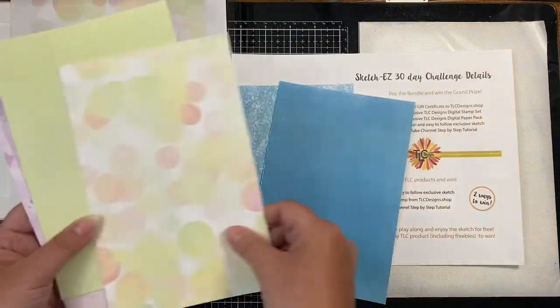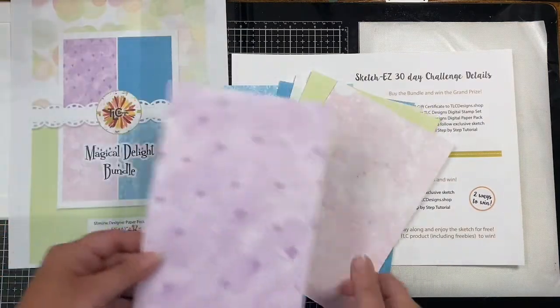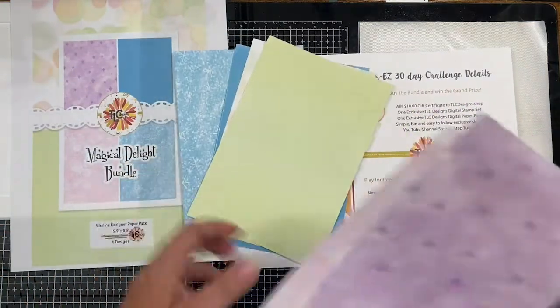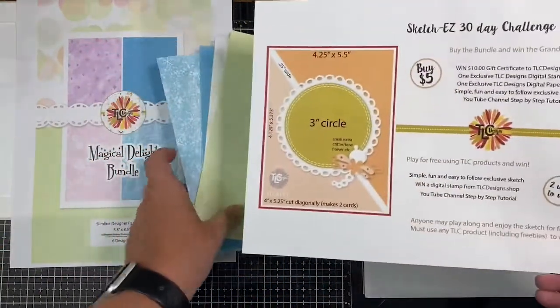So here are the different papers in the bundle that I printed off with my laser printer. They are five and a half by eight and a half inches, and I'll be using the teal and green papers for the two cards that I'm making today.